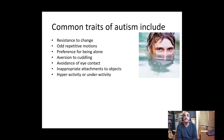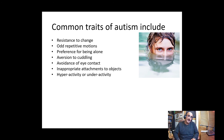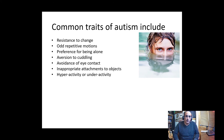People with autism may have hyperactivity or underactivity — something of a paradox. One person might be overactive, running around and highly engaged with everything in a hyperactive way. Another might be more lethargic, quiet, and slow-moving, with movements that are deliberate and steady rather than hyperactive.